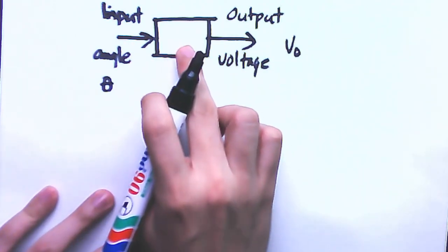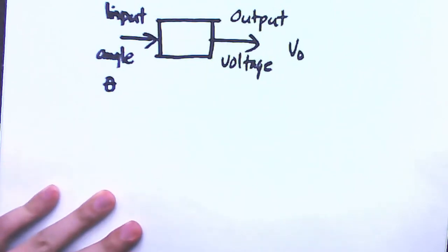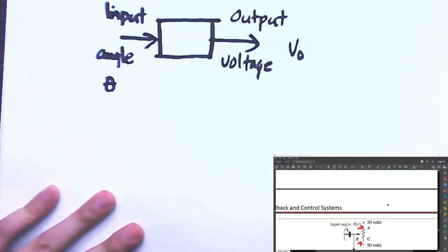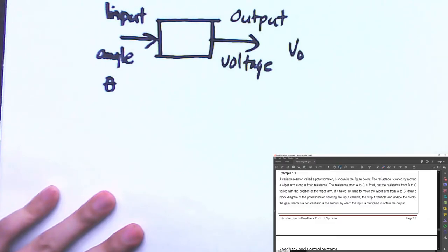The question is, what do we place inside the block? The problem asks us to put the gain inside the block. The gain is a constant and is the amount by which the input is multiplied to obtain the output.